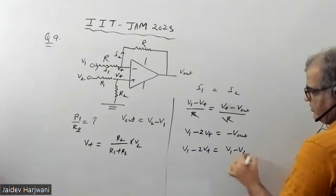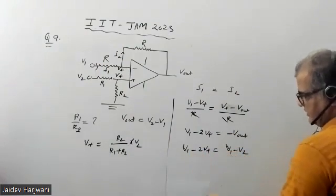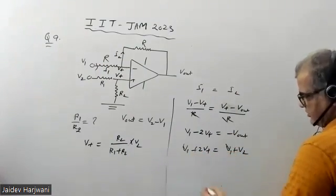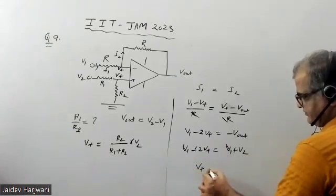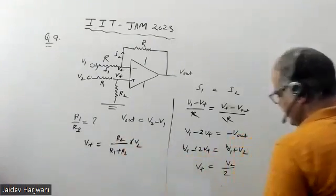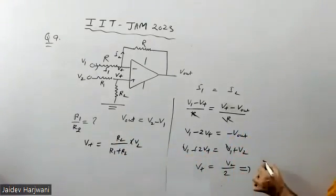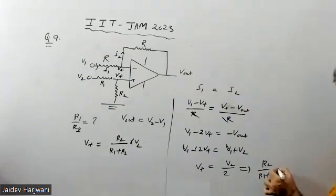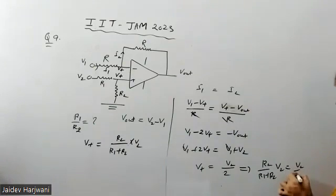V output is given to us as V2 minus V1, so I can write V1 minus V2. V1 cancels, minus signs cancel, so I'm left with 2V+ equals V2. V+ was already calculated, so this implies R2 upon R1 plus R2 times V2 equals V2 by 2.